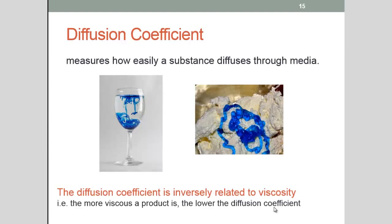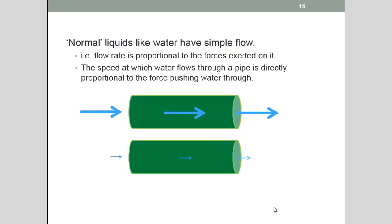Now let's move on to shear rate and rate of shear and the concepts that we need to know about those. Normal liquids like water will have a simple flow. That is, their flow rate is proportional to the forces that are exerted on the water. The speed at which the water flows through a pipe or a hose for instance is directly proportional to the force pushing that water through. So you can see this arrow is very thick. It's indicating that the force that's being applied to this body of water going through the garden hose is high or large. And the arrow is very long, indicating that the speed is very fast of the water.